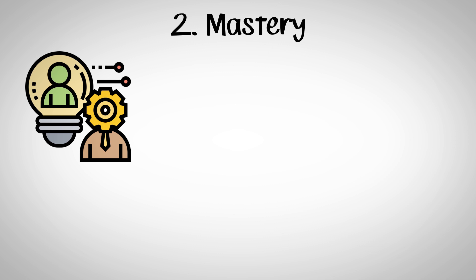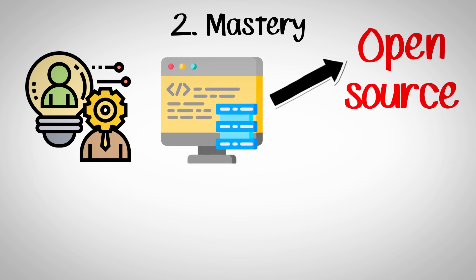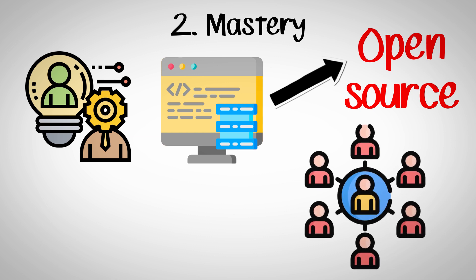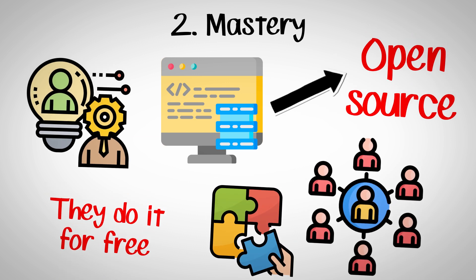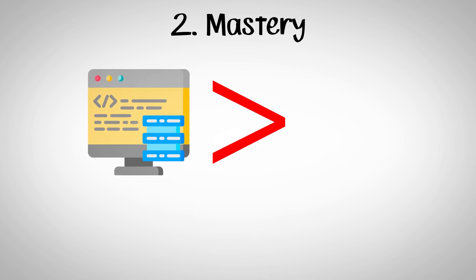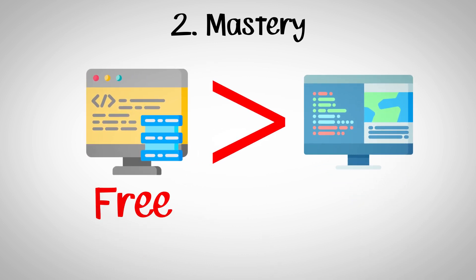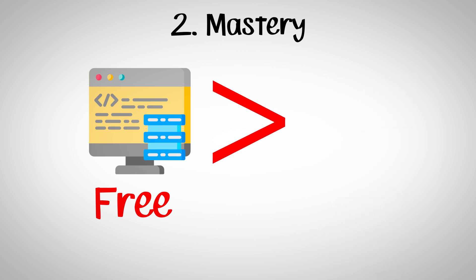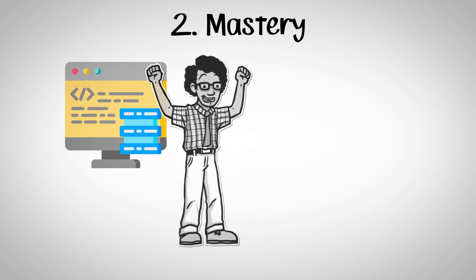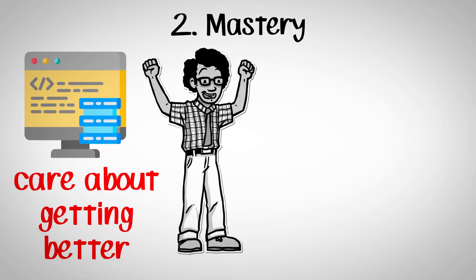Number two is mastery. In the world of software engineering, oftentimes a lot of the best written code is open source. Open source software is usually written by engineers that are writing code on their own for free just for the sake of building something. In fact, most of the times these open source softwares are actually better than the software made by employees being paid thousands of dollars. And that's because open source coders are motivated by mastery. They care about their skill. They want to reach their maximum potential.